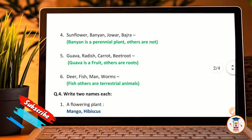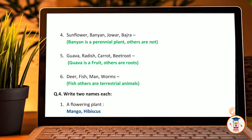Continuing odd one out: sunflower, banana, johar, burji — banana is the odd one out as it is a perennial plant while the others are not. Guava, radish, carrot, beetroot — guava is the odd one out because guava is a fruit while the others are roots. Deer, fish, man, worms — fish is the odd one out because fish is an aquatic animal while the others are terrestrial animals.